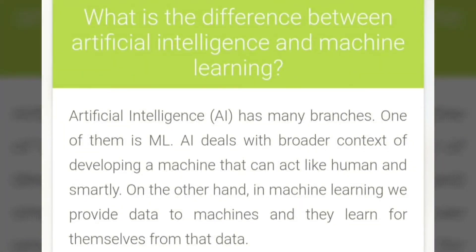What is the difference between artificial intelligence and machine learning? Artificial intelligence has many branches. One of them is ML. AI deals with the broader context of developing a machine that can act like a human, and smartly. On the other hand, in machine learning, we provide data to machines and they learn from themselves from the data.